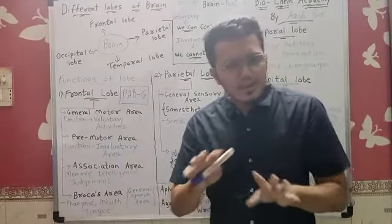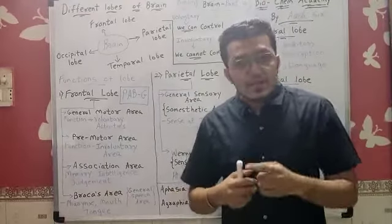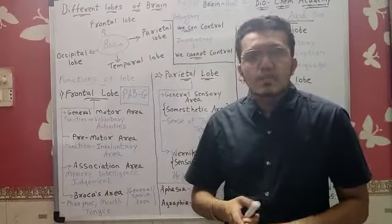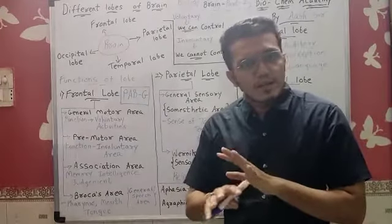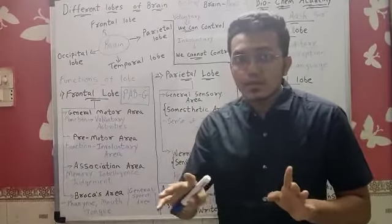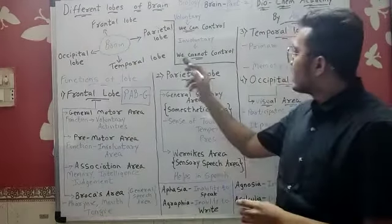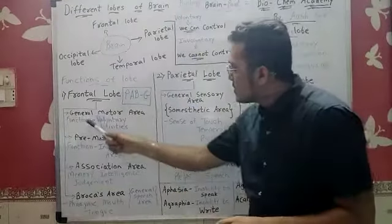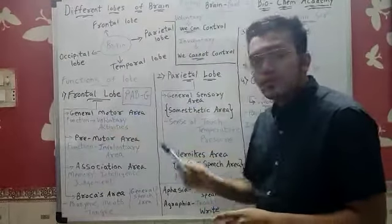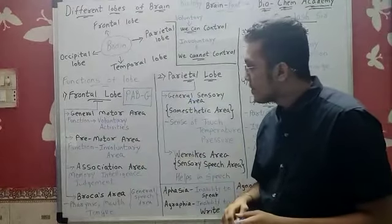The activity we can't control is called involuntary activity, such as digestion, respiration, blood circulation, and many other activities which we can't control. If we can't control that type of activity, it is called involuntary activity, which we cannot control. So the general motor area function is controlling voluntary activity. Premotor area function: involuntary activities.